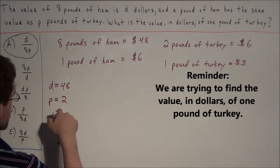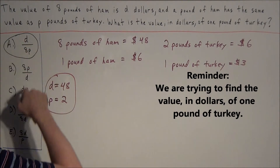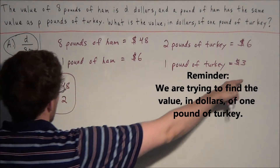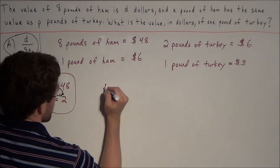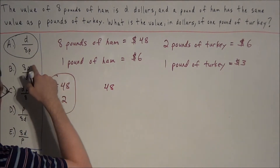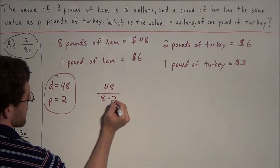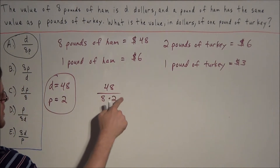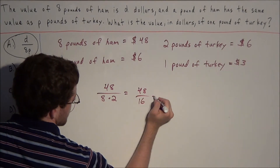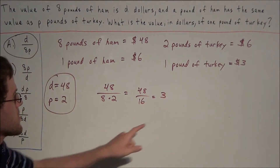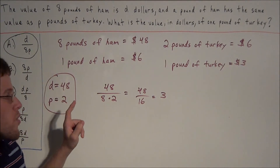Now we plug in d equals 48 and p equals 2 and see which answer choice generates 3 dollars. Plugging into choice A, we have d divided by 8p, substituting d equals 48 and p equals 2. This gives us 48 divided by 16, which equals 3 — exactly the price of 1 pound of turkey we generated by picking random numbers.